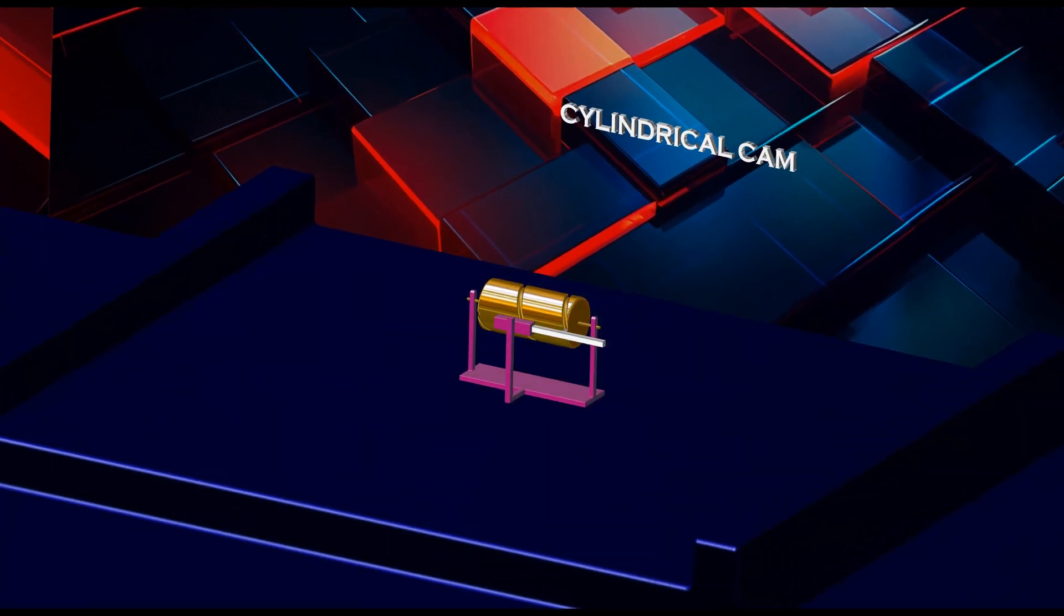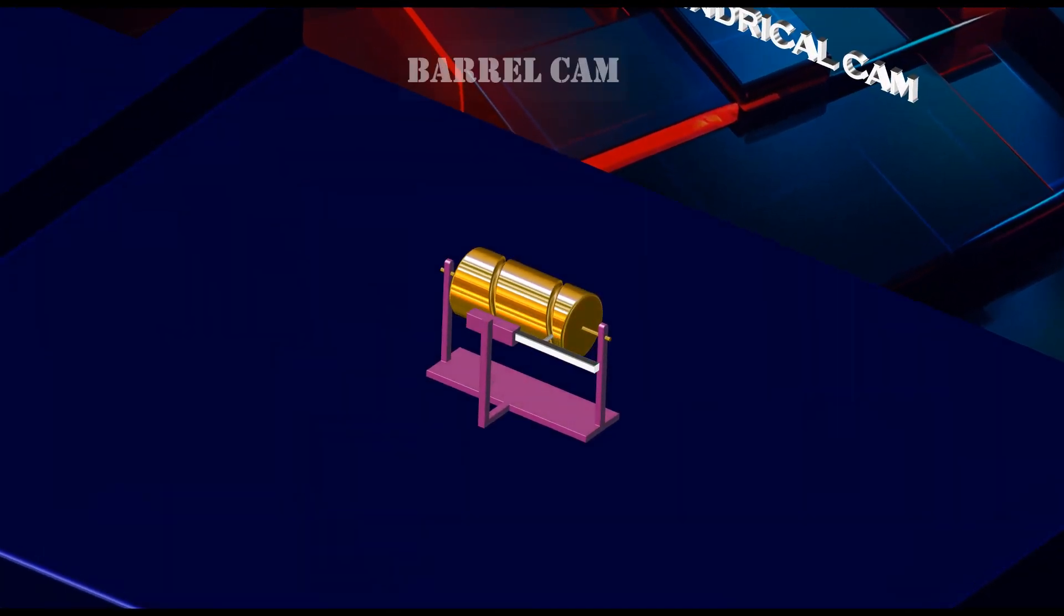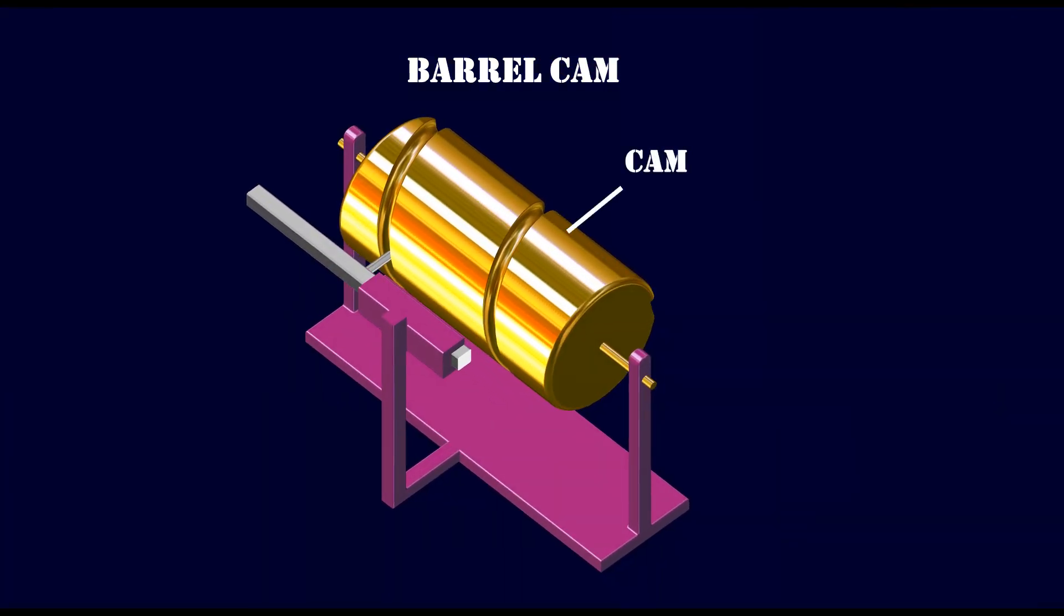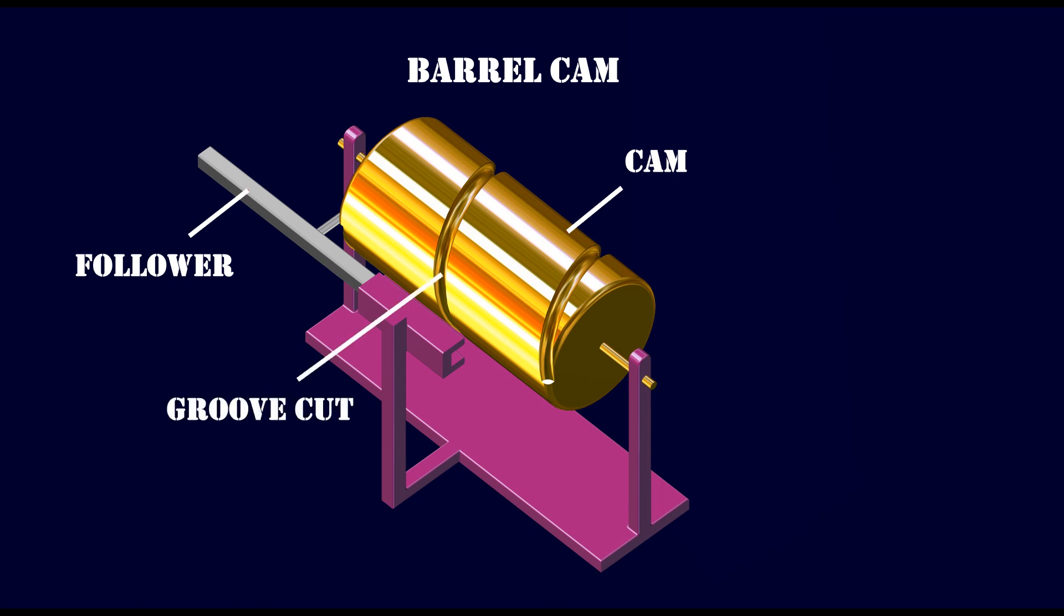What is a cylindrical cam? A cylindrical cam is also called a barrel cam. The cylindrical object is the cam, and the running object is the follower. The cam has a groove cut on its surface, and the follower rides on it.